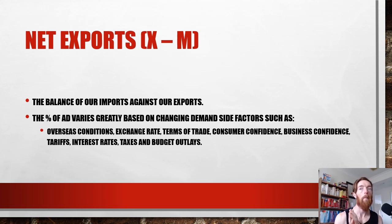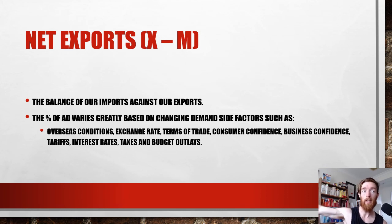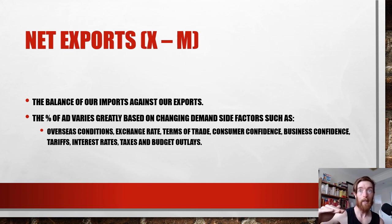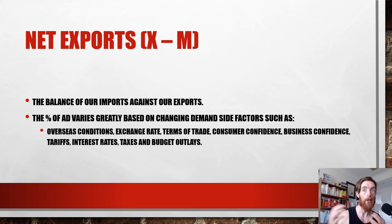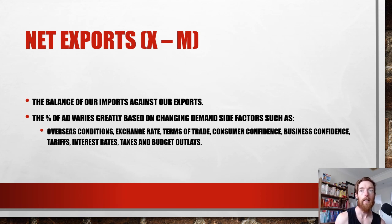A massive tip for exam questions about aggregate demand: the question will be something like 'explain how blank impacts aggregate demand.' You need to explain the factor and say what component of aggregate demand it directly impacts. For example, a decrease in personal income tax means households have more disposable income, which is likely to increase their private consumption spending, leading to an increase in aggregate demand. That structure applies to all your answers going forward. If you have any questions, feel free to comment below, send an email, or check out links to the website and Discord below.